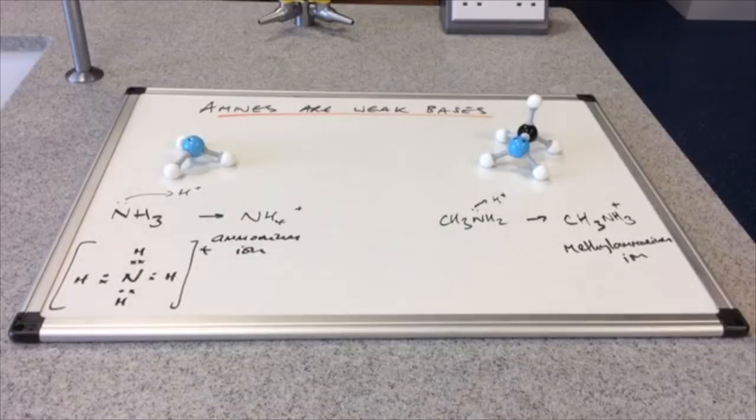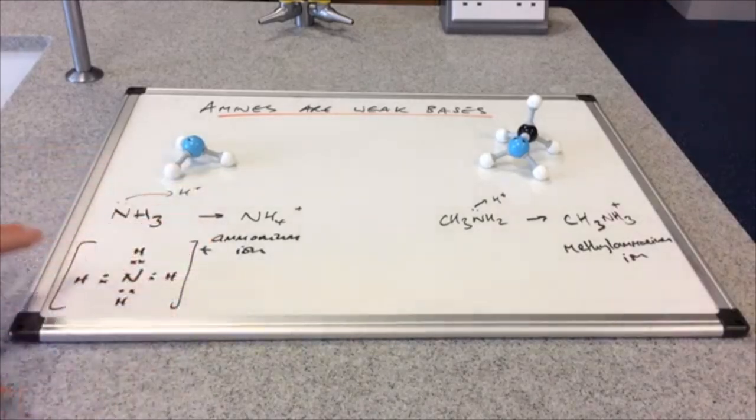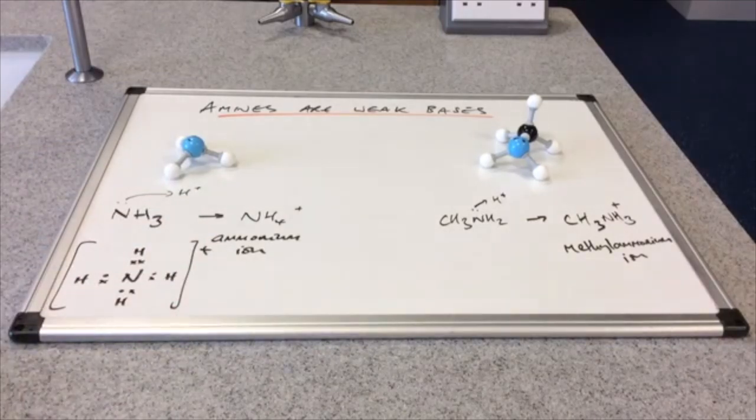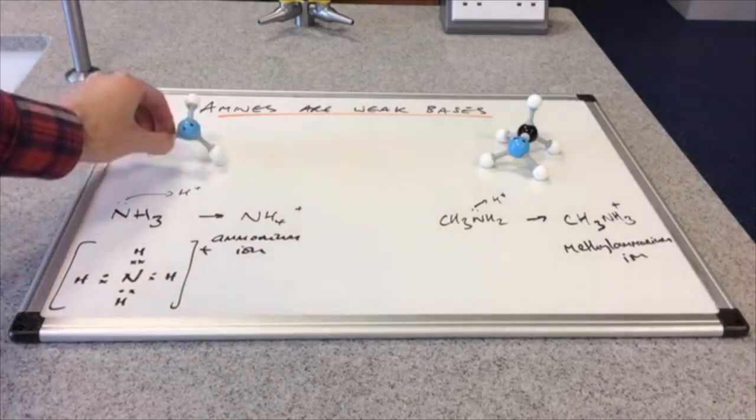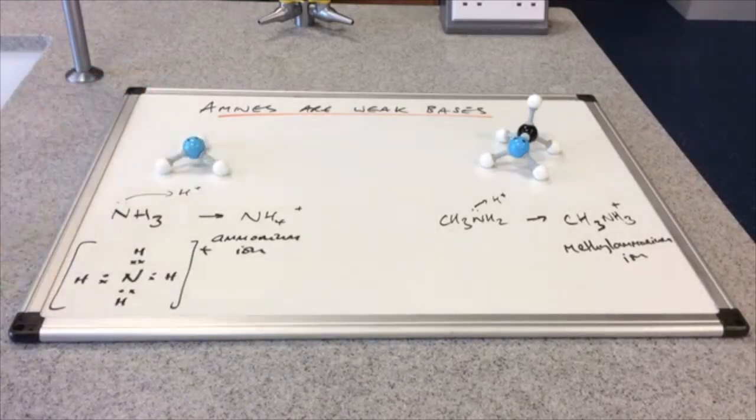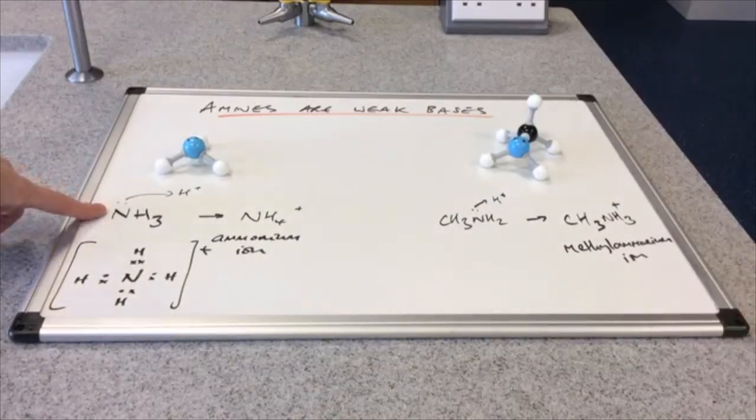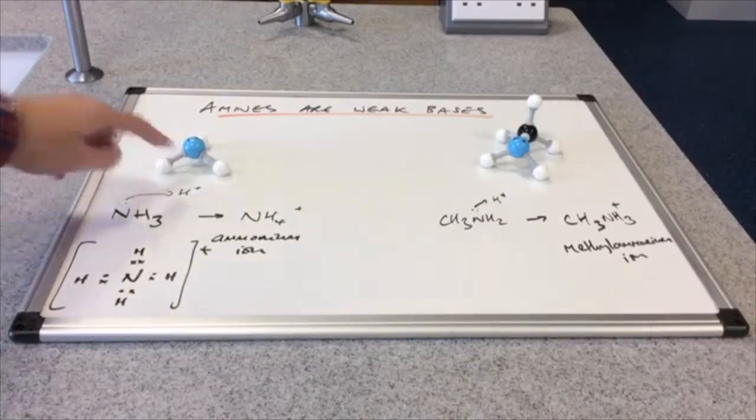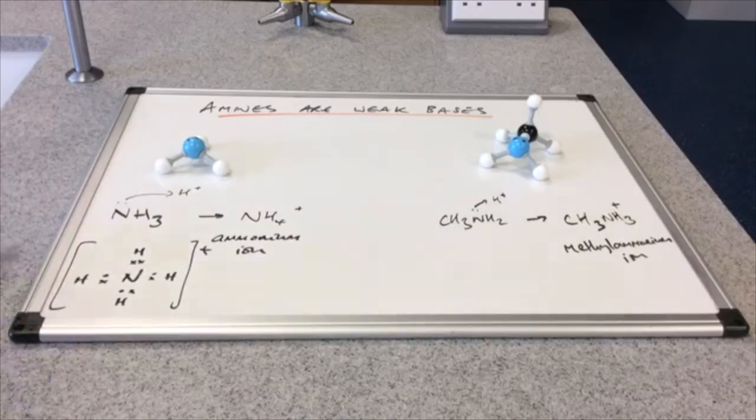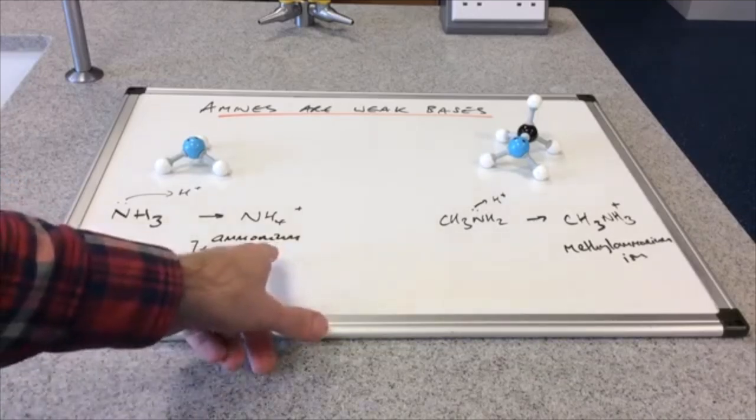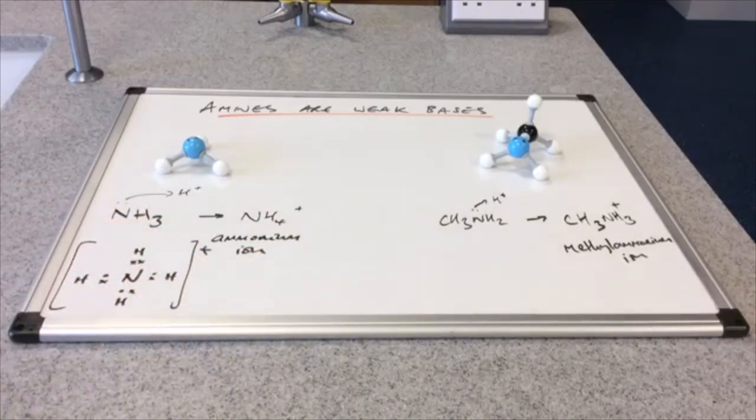We'll take a look at the base properties of amines now. You can see on the left hand side of the board I've got the stuff that we needed to know at AS about ammonia. So ammonia is a base. Remember it's got a lone pair of electrons on the nitrogen. I've represented them by that pair of dots there on the model. So the lone pair of electrons can accept a proton from an acid and form a dative covalent bond or a coordinate bond. And the product of that is the ammonium ion.